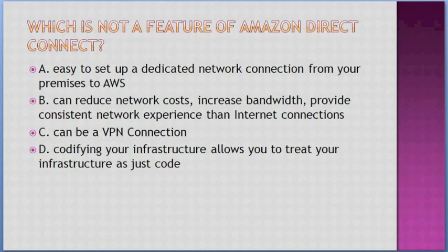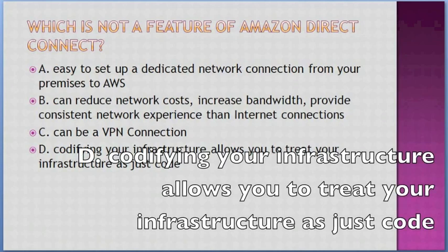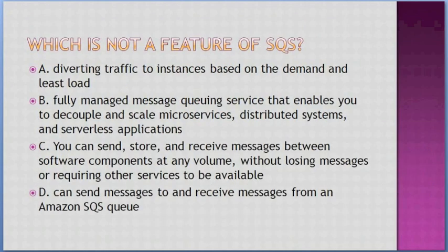Which is not a feature of Amazon Direct Connect? Options: A. Easy to set up a dedicated network connection from your premises to AWS, B. Can reduce network costs, increase bandwidth, and provide a more consistent network experience than internet connections, C. Can be a VPN connection, D. Codifying your infrastructure allows you to treat your infrastructure as just code. Answer: D — codifying your infrastructure allows you to treat your infrastructure as just code.